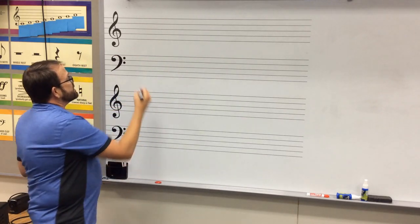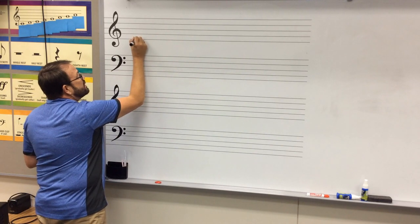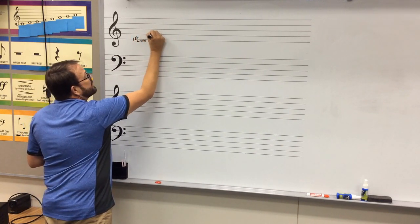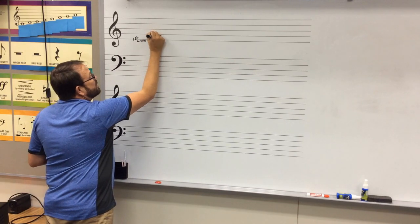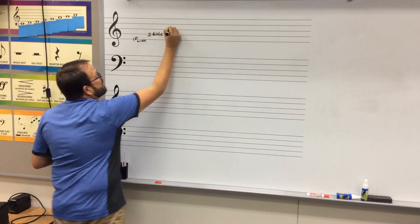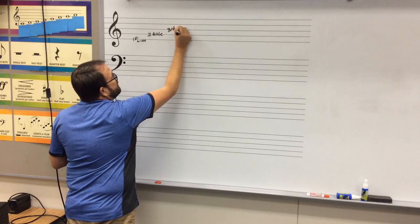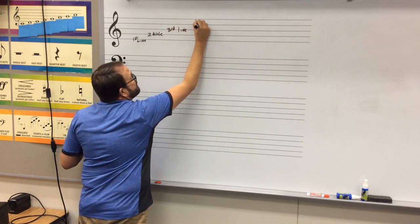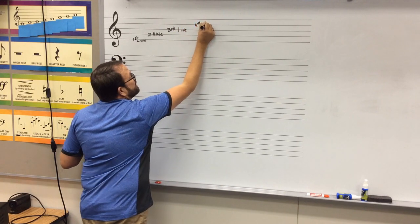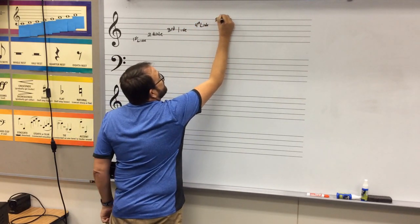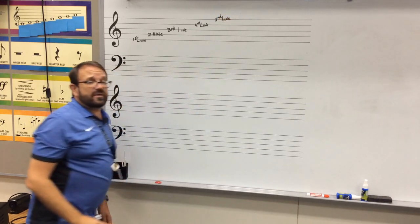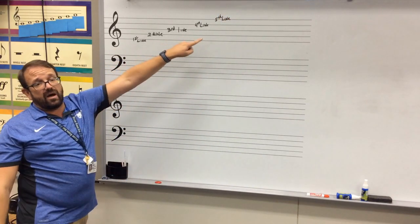Okay, so this would be first line, second line, third line, fourth line, and fifth line. We always count the lines and spaces going from the bottom up, okay.